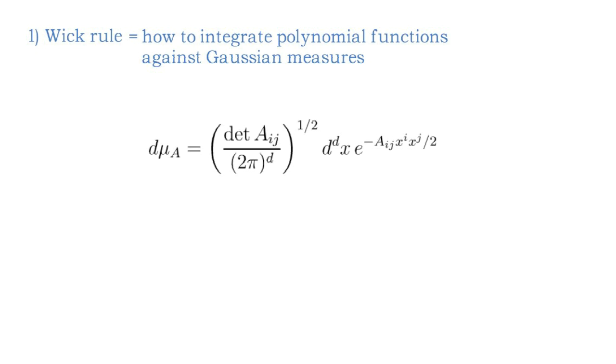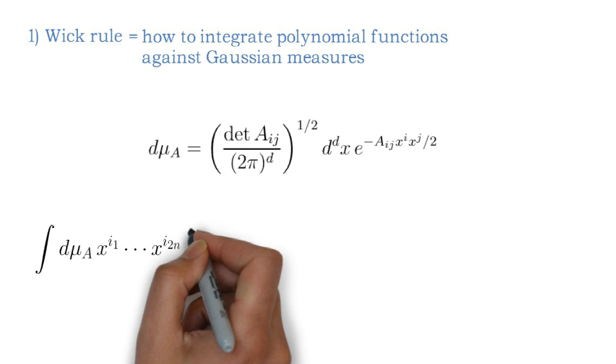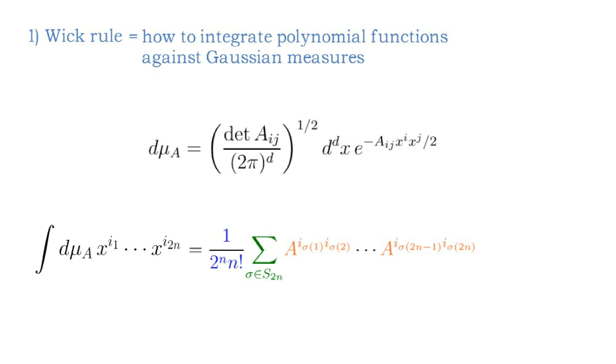Suppose we are given the following normalized Gaussian measure on Rd, where Aij is a positive definite d by d matrix. Here, we are working with the standard coordinate system x1 through xd. We want to integrate a monomial against our Gaussian measure, which we can assume to be of even degree 2n. Such a monomial can be written as a product of some xi1 through xi2n.